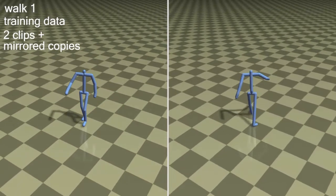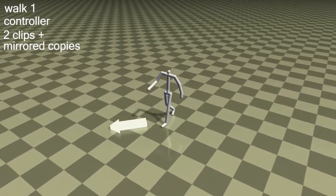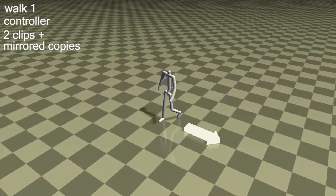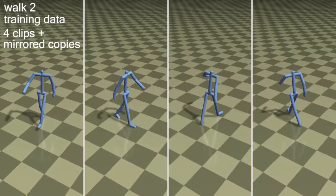Our method can produce a walking controller from as few as two clips, while additional clips can further increase its agility.